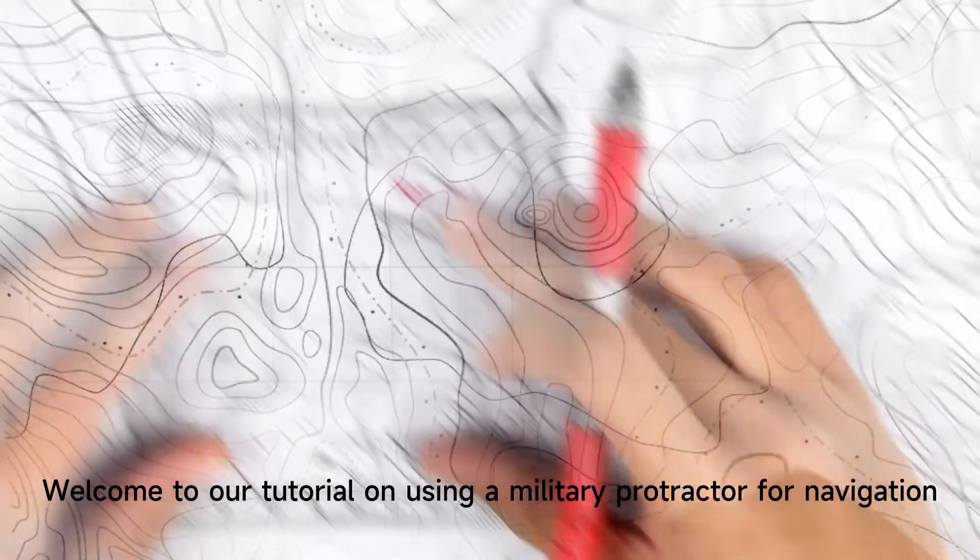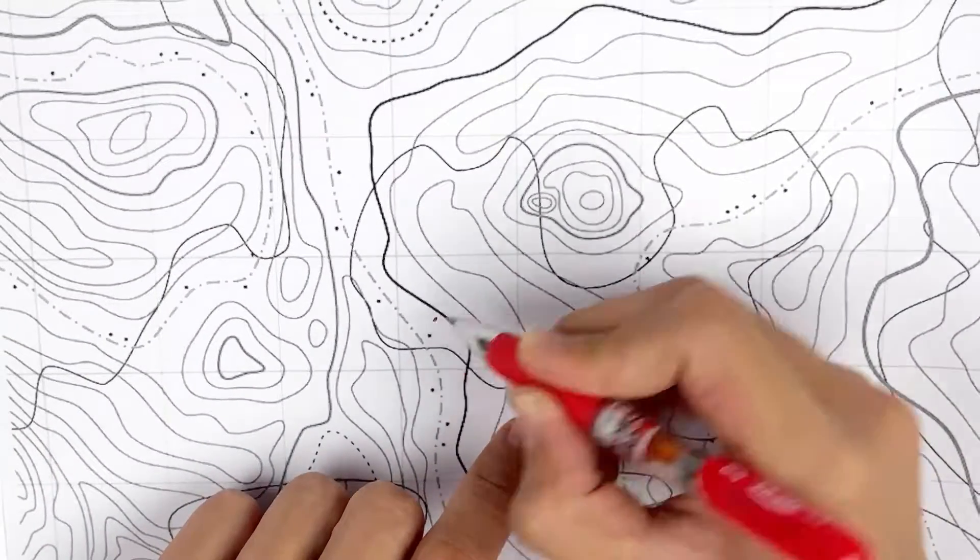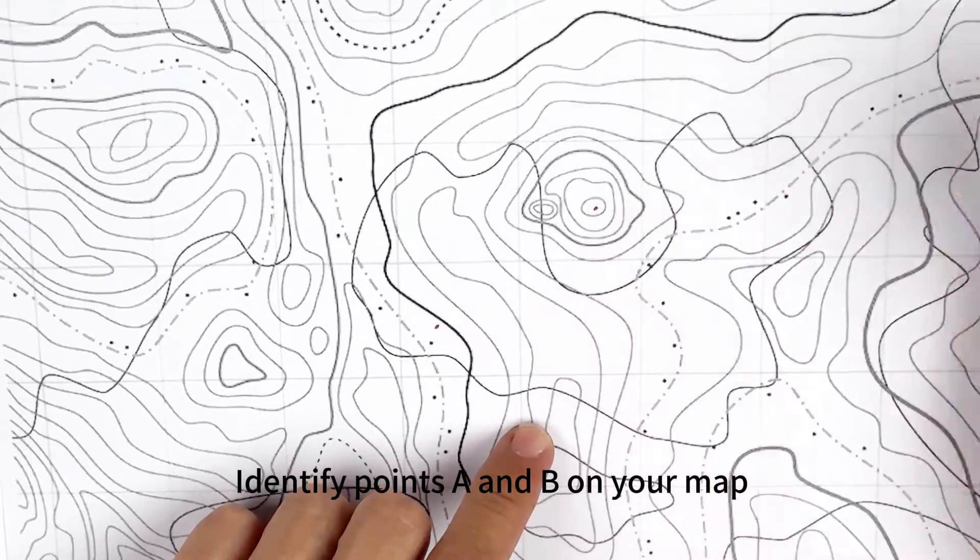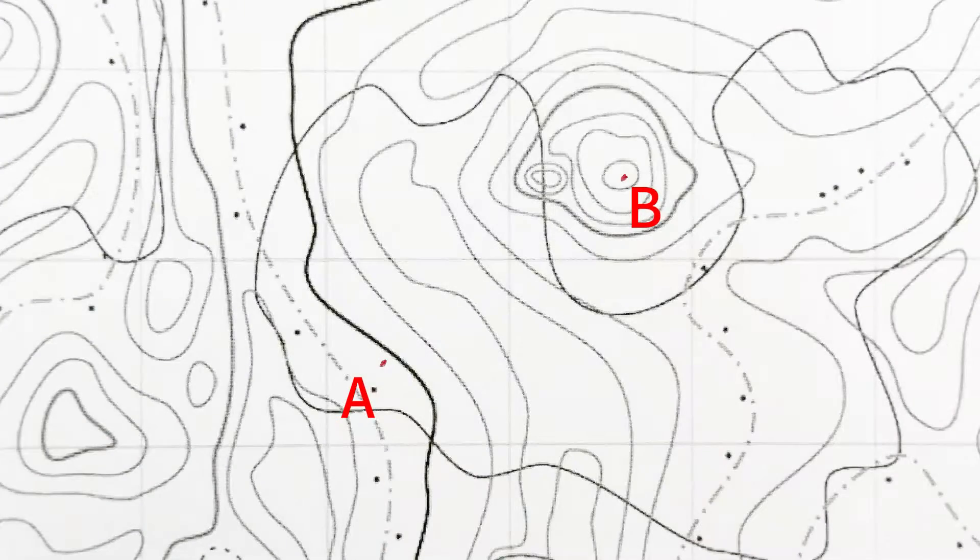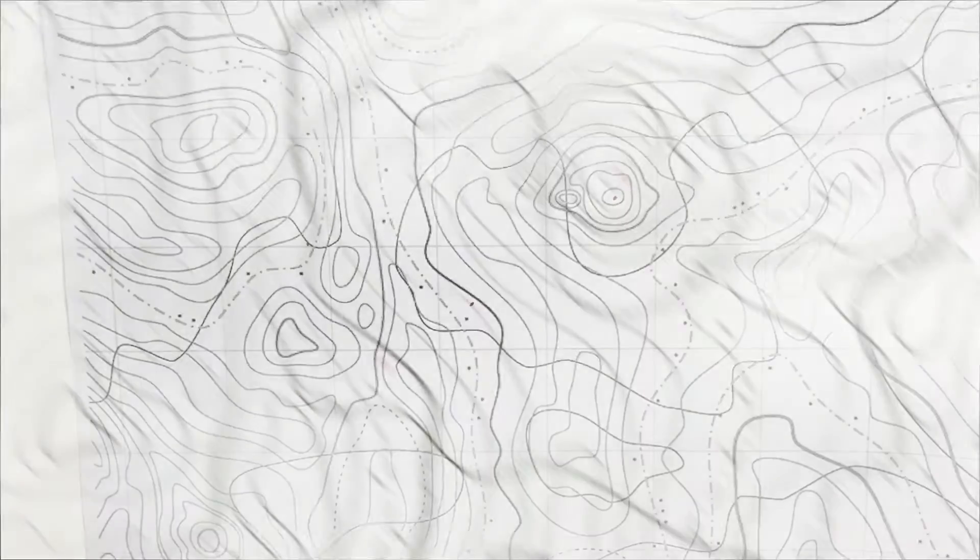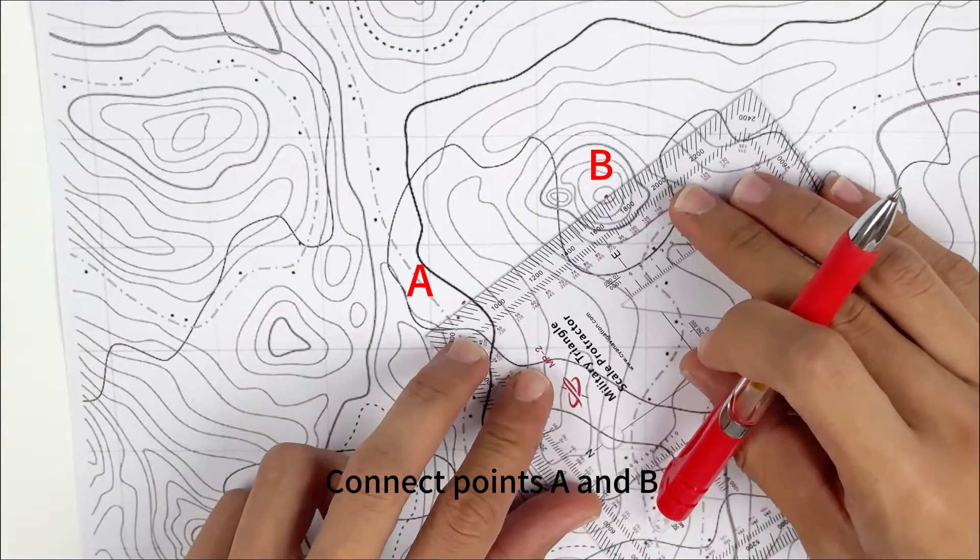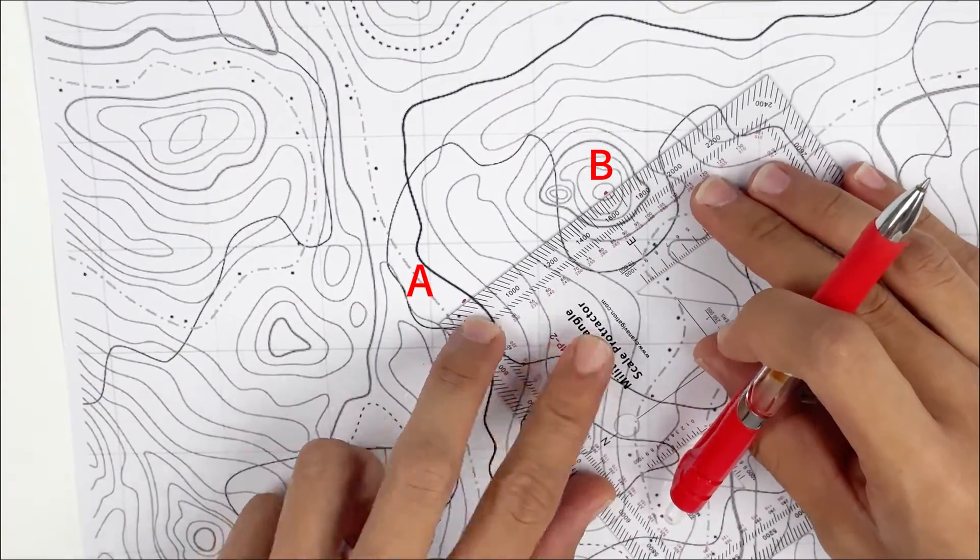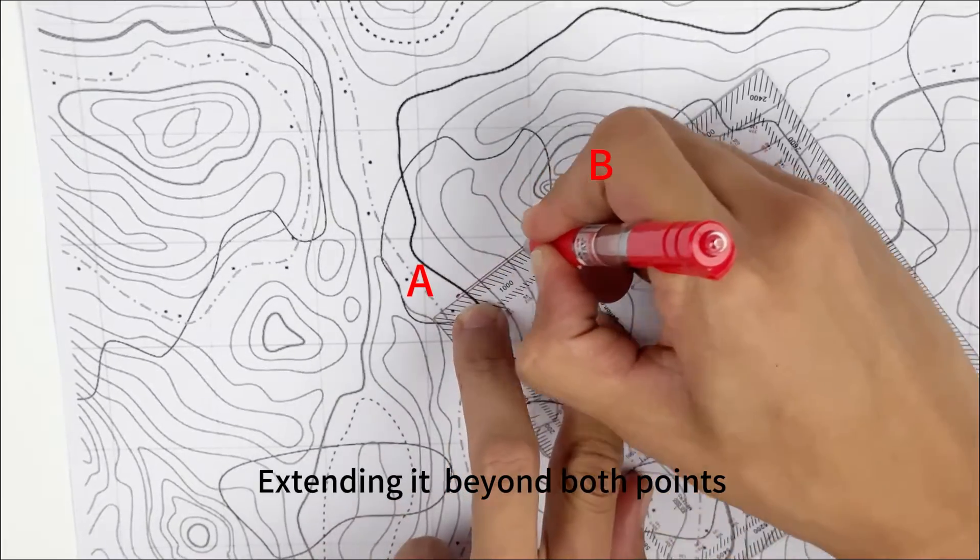Welcome to our tutorial on using a military protractor for navigation. Identify points A and B on your map. Connect points A and B, extending it beyond both points.